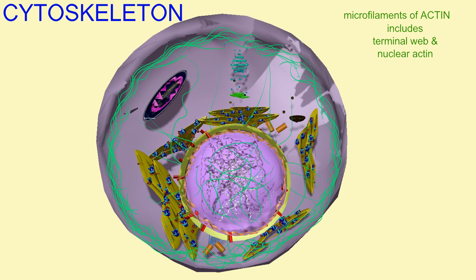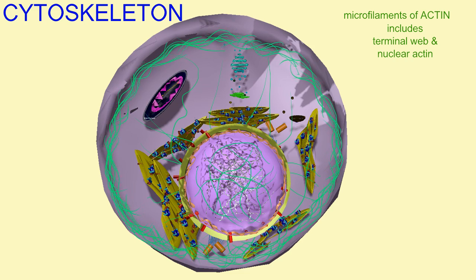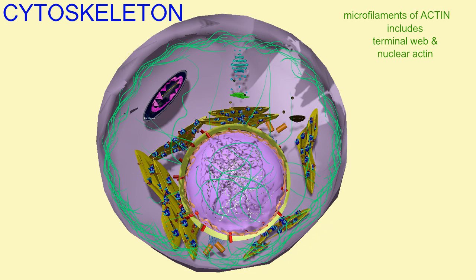just deep to the cell membrane, forming a terminal web region which restricts organelle movement and can resist compression of the cell and provide force for shape changes. During cell division, it forms a cleavage furrow.